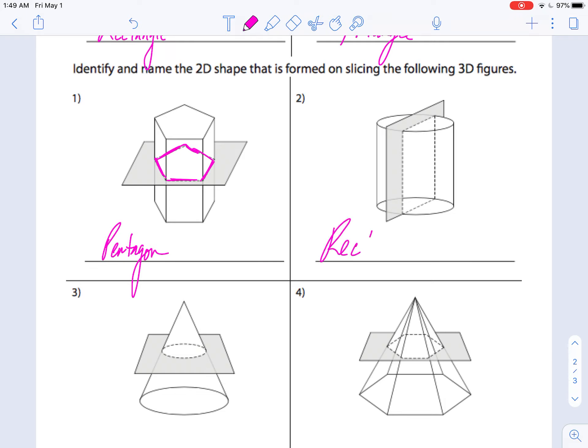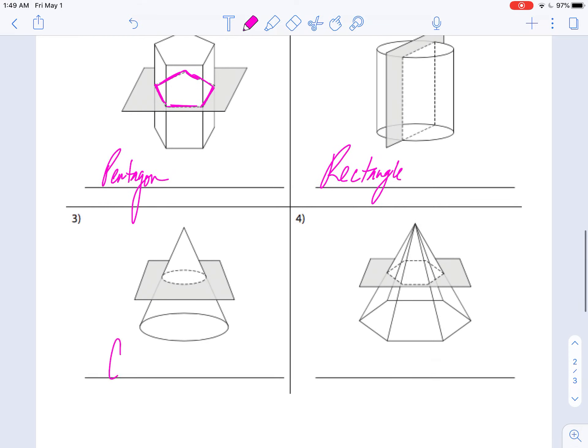2 is a rectangle. 3 is a circle. And 4 is a... Let's see, what is this? 1, 2, 3, 4, 5, 6. That is a hexagon.